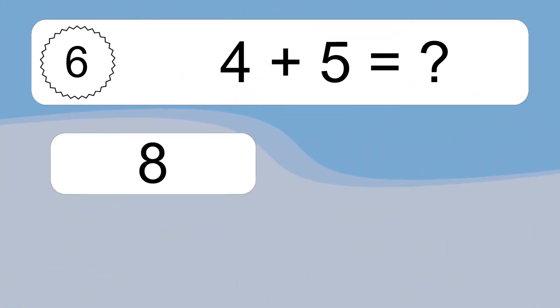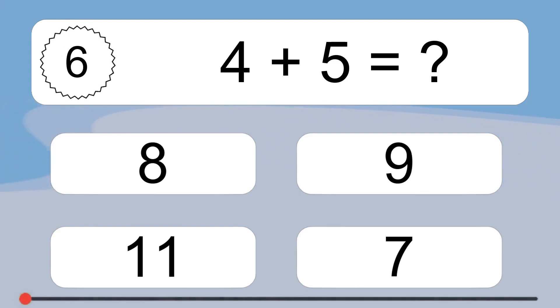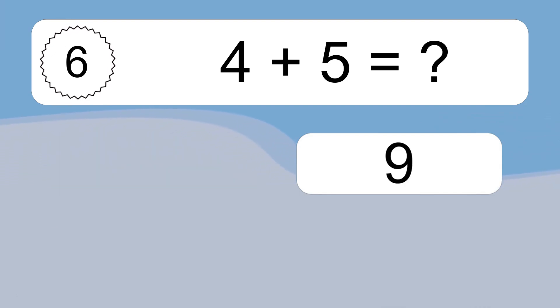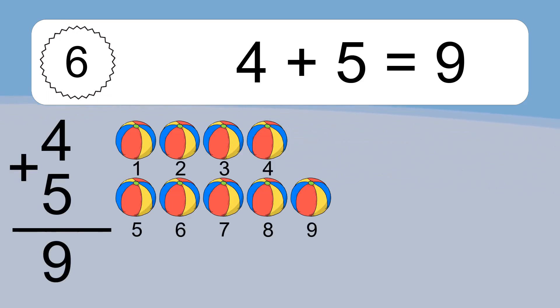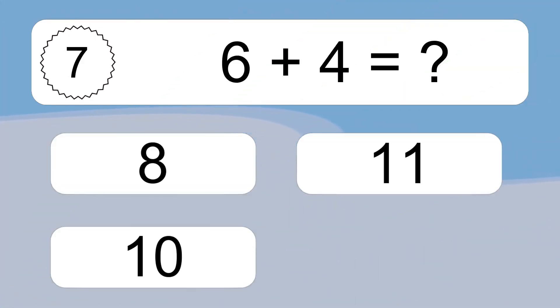4 plus 5 equals what? 4 plus 5 equals 9. Let's count it. 1, 2, 3, 4, 5, 6, 7, 8, 9.